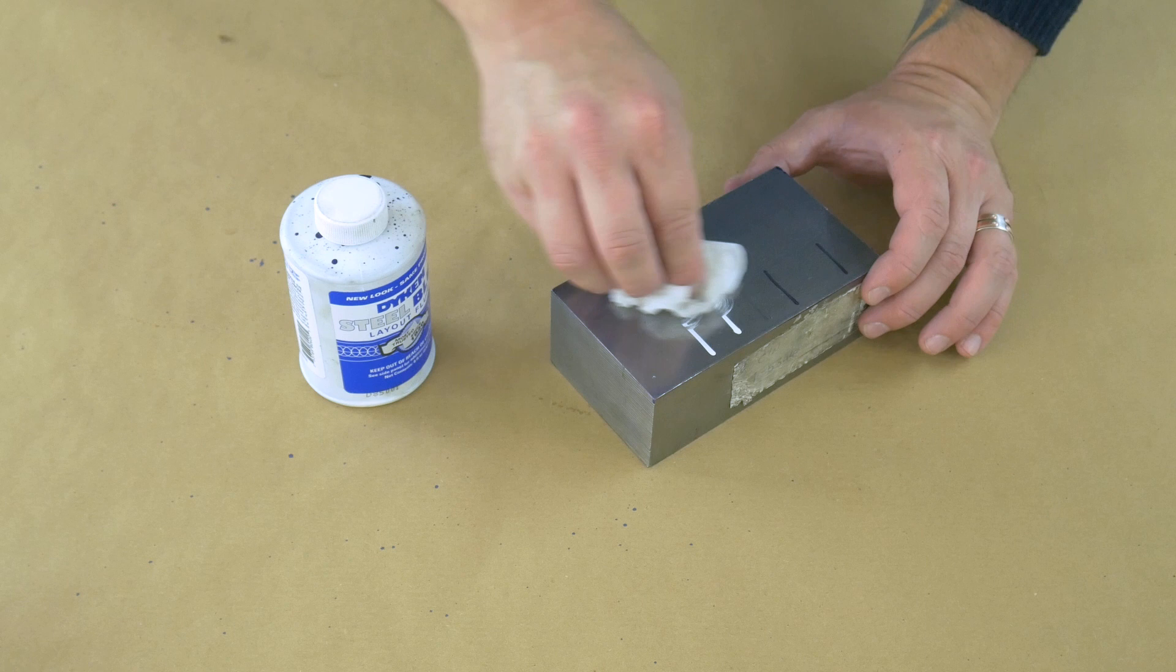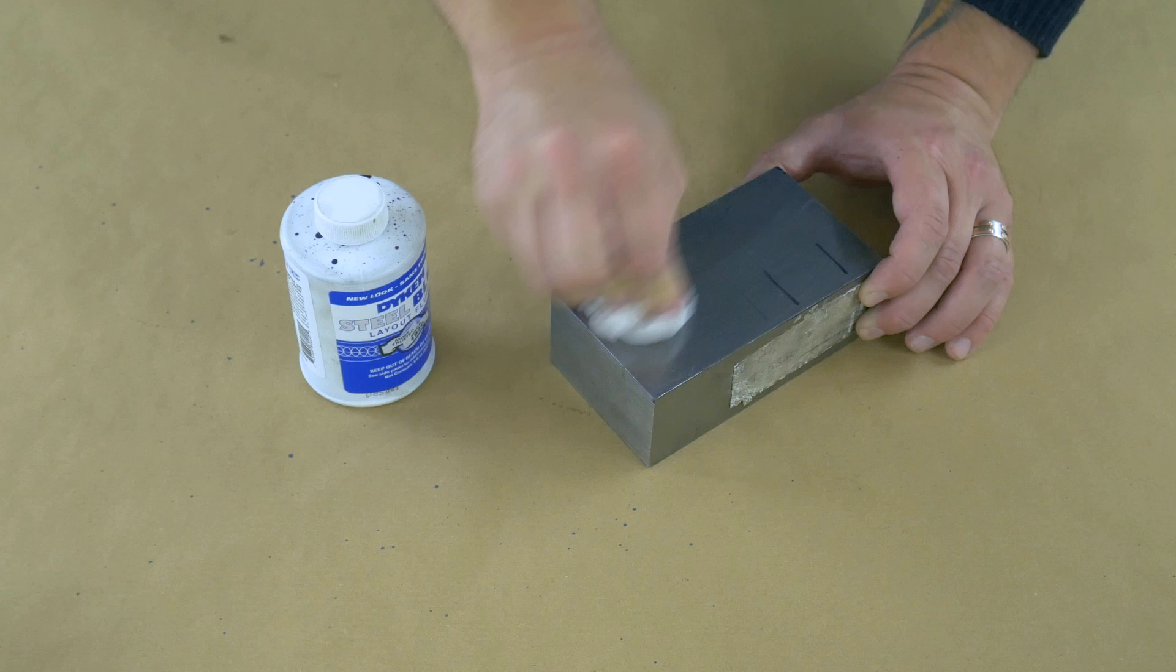And the nice thing about this stuff as well is that it's water soluble. So if we grab a baby wipe, I keep baby wipes in the workshop because we don't have running water down here. So it's something to clean my hands with. Actually they're very good. You can see that wipes off nicely.